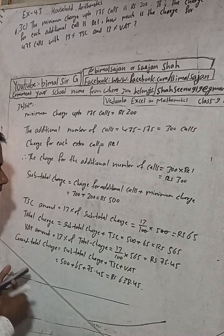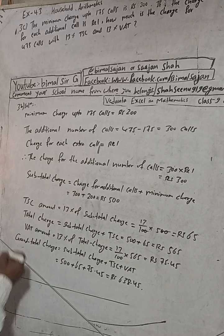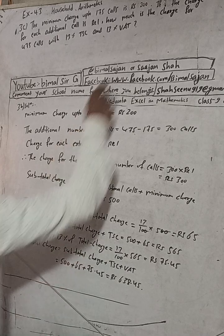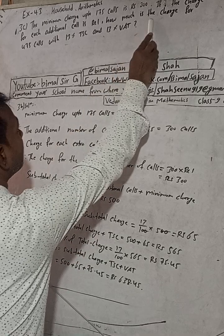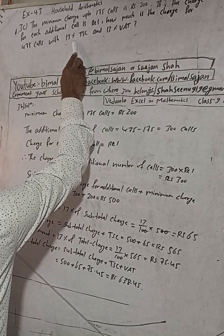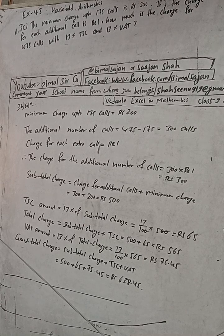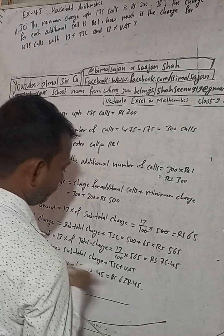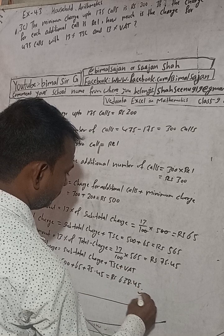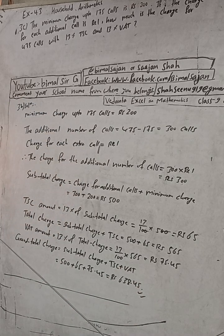Therefore, the charge for 475 calls with 13% TSE and 13% VAT is Rs.638.45. This is the required solution.